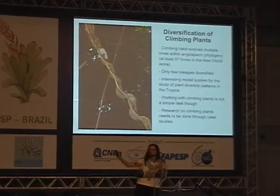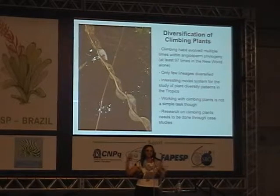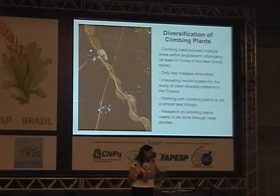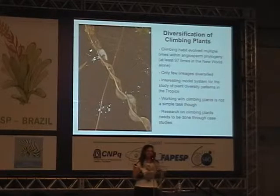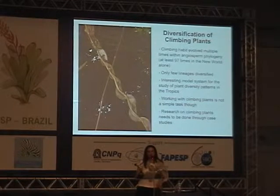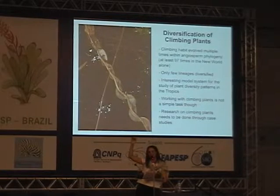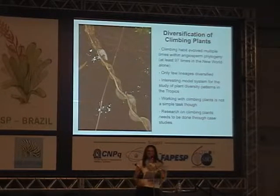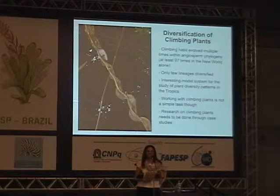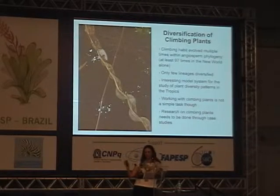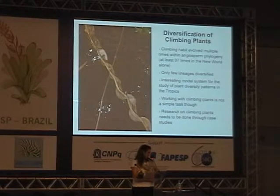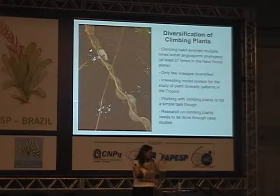This generates questions about why some liana lineages diversified while others didn't, and also provides us with multiple replicates throughout the angiosperm phylogeny, making this group a really interesting model to study diversity patterns in the tropics. However, working with climbing plants isn't easy — they grow 40 meters above the forest floor, and it can take a whole day to collect a single specimen, so we need to focus on particular groups to gather nice datasets.